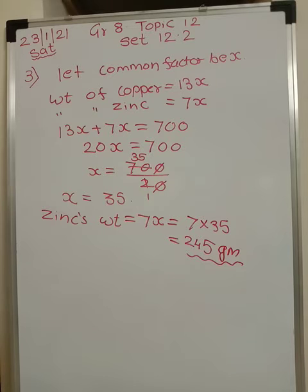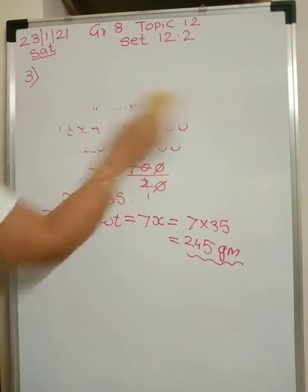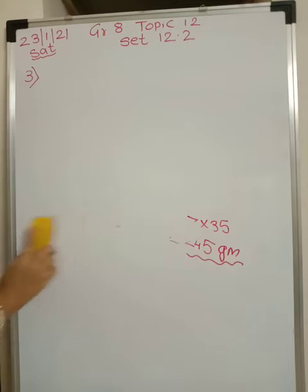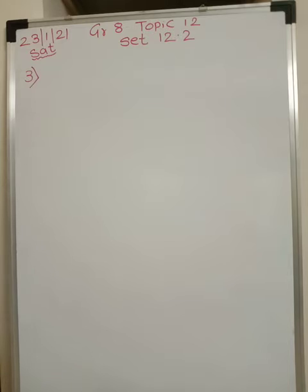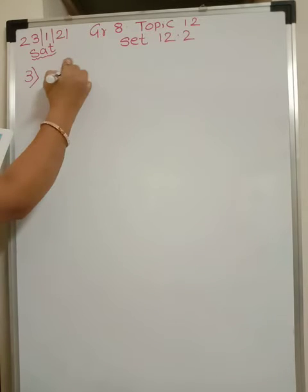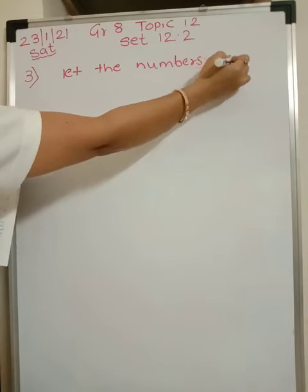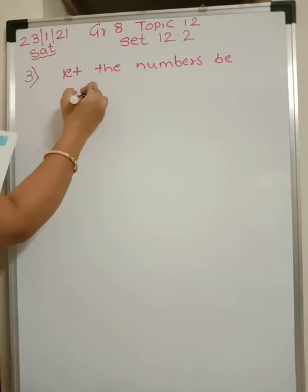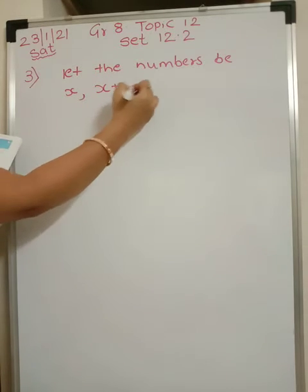Let's go to the fourth problem. Find 3 consecutive whole numbers whose sum is more than 45 but less than 54. We have to find 3 consecutive numbers — consecutive means coming successively, one after the other. Let the numbers be x, x plus 1, and x plus 2.